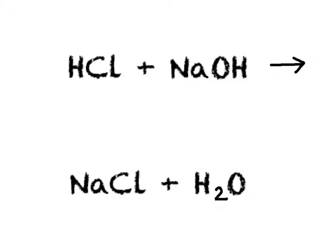Let's do an example. This question asks if this reaction is a redox reaction or not. So what we do is we go through each of the different atoms in the substances and have a look at the oxidation number. Hydrogen will always have an oxidation number of plus 1 — that's true in hydrogen chloride, in sodium hydroxide, and in water, but there are two of them which we mustn't forget about. For oxygen, that's always going to have an oxidation number of minus 2, which is true in sodium hydroxide as well as in water.